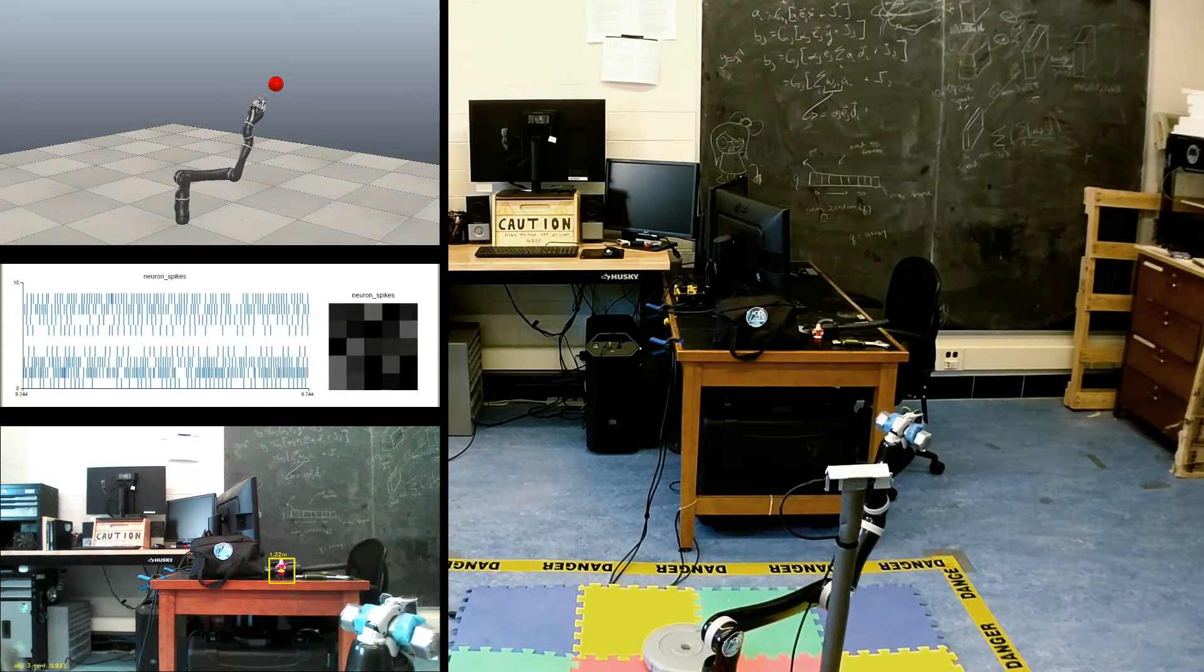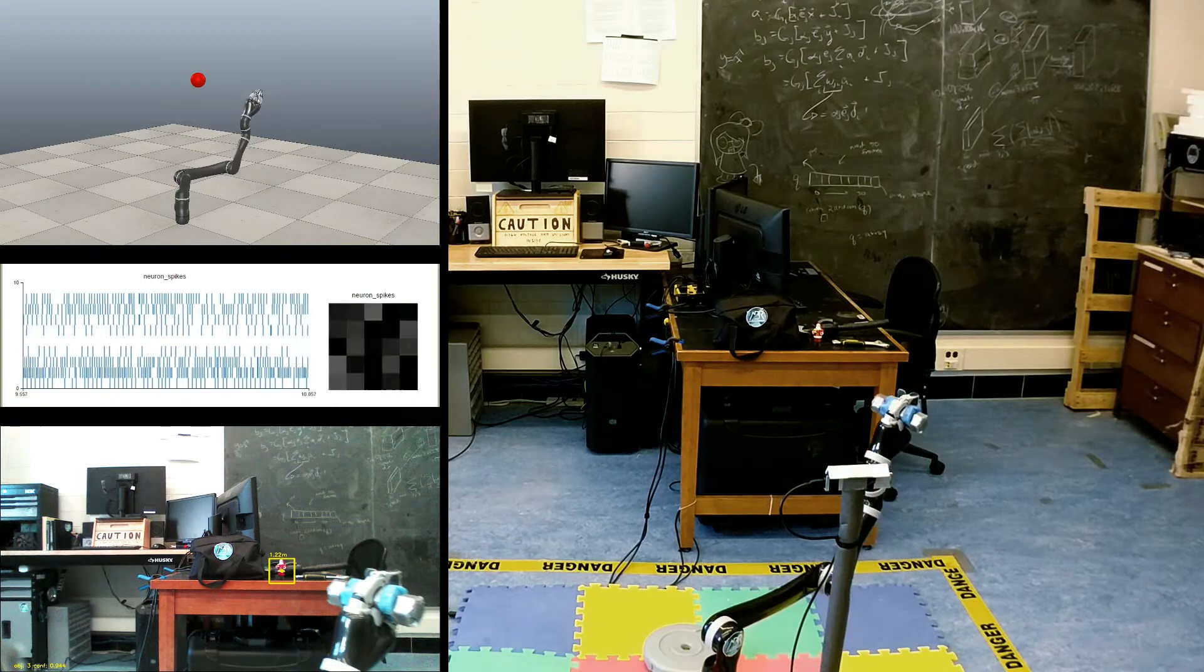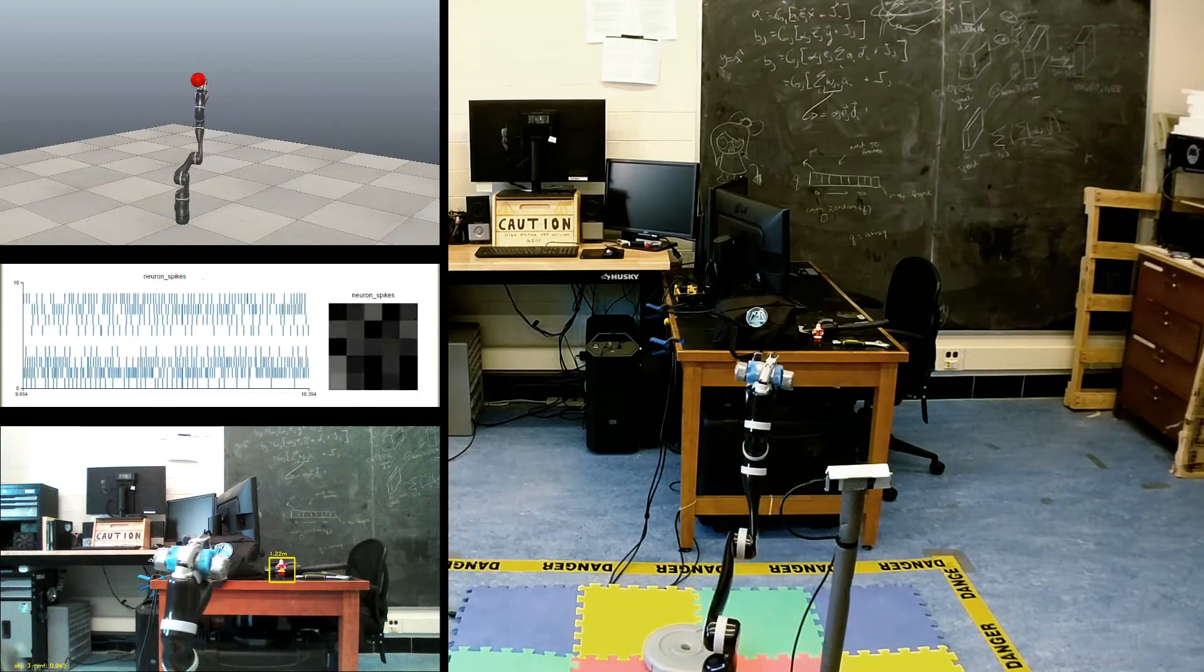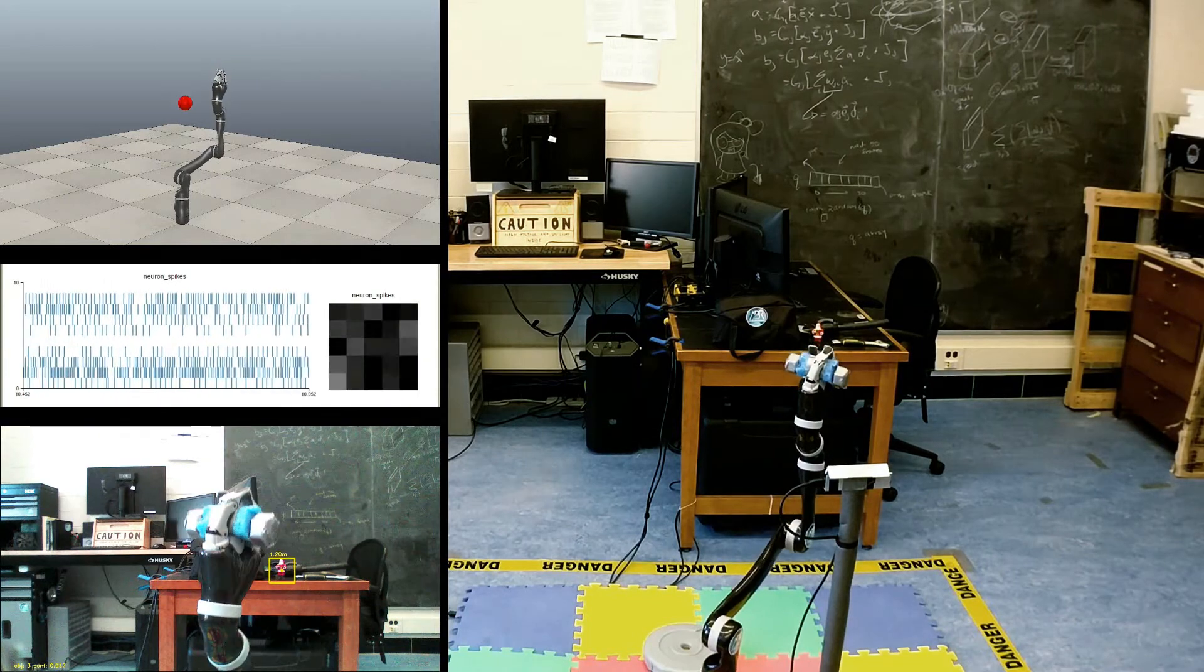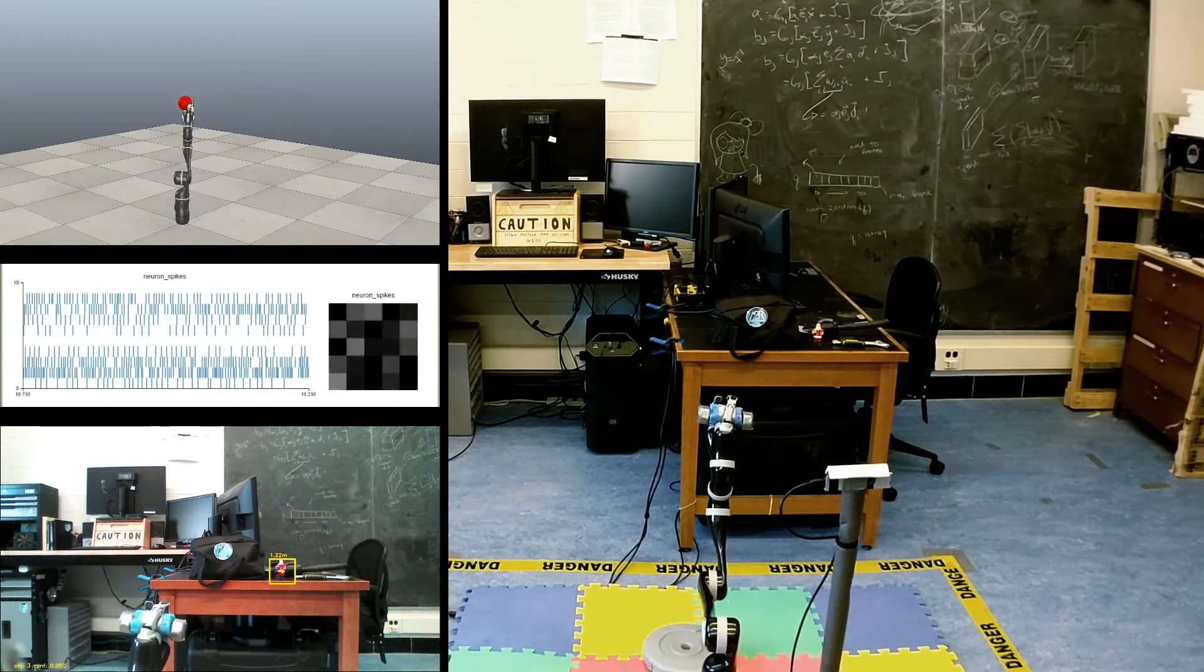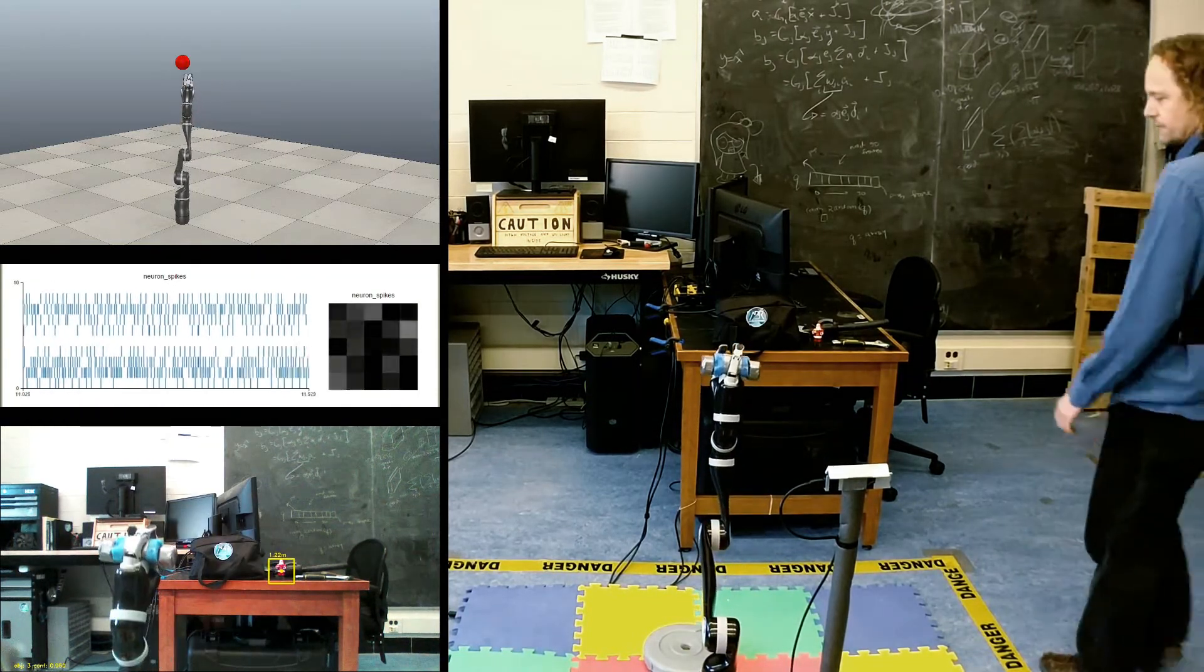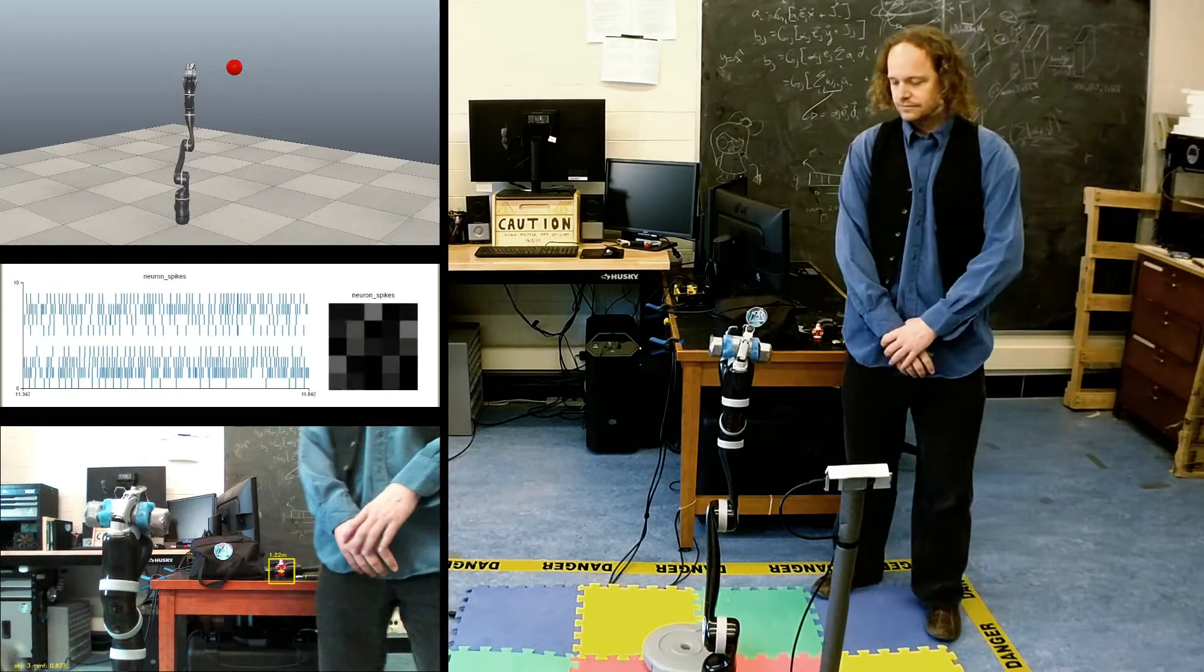It's worth noting that the vision system is a deep neural network that we have built for finding objects. However, implementing the control system using deep learning is infeasible because that approach requires thousands of trials to improve performance, whereas here we would like rapid improvement with real-time experience.